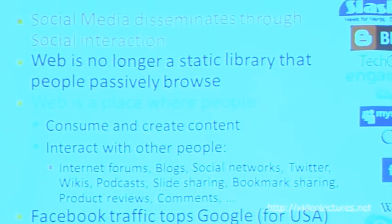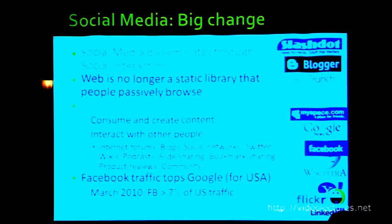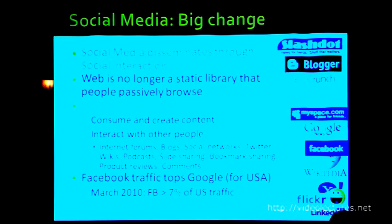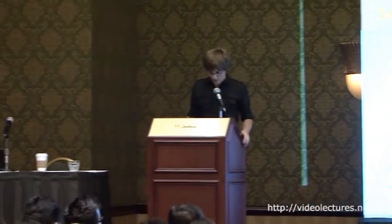Because social media is disseminated through social interaction, the web is no longer a static library that people passively browse. Today the web is a place where people consume and create content, and also interact with one another. There is a long list of venues on the web where people create and interact: online discussion forums, blogs, social networks, Twitter, wikis, slide sharing sites, bookmark sharing sites, product review sites, commenting sites, and so on.